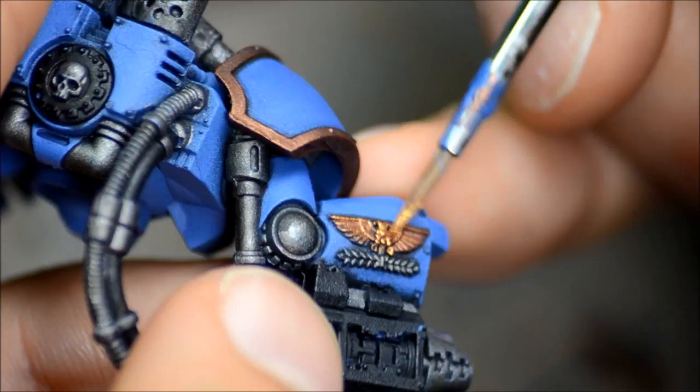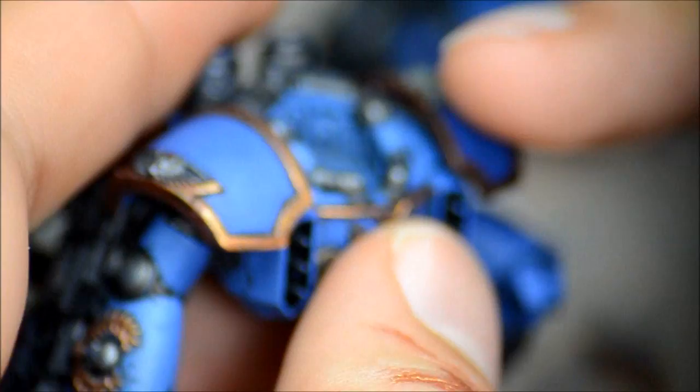I'm just painting up the gold on the highlighted areas, trying to stay away from the crevices. Trying to get the right amount of paint on the brush so that when I do kind of an overbrush here with the edge of the brush, it doesn't flow into any of the cracks.